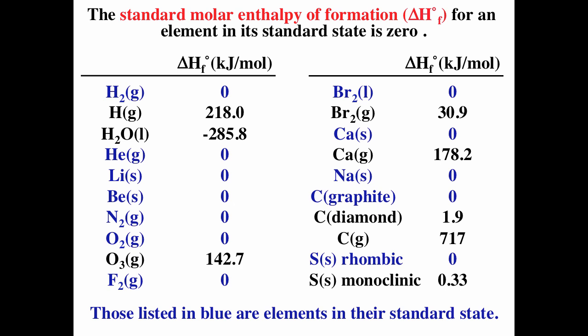You need to be able to recognize elements in their standard state. The elements in blue are defined as having zero enthalpies of formation. Elements in their standard state are the most stable phase for an element under nominal conditions. For hydrogen, we typically find it as hydrogen gas, H2 — that is the element in standard state.